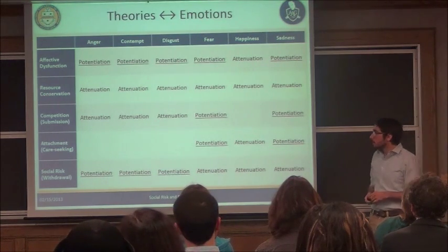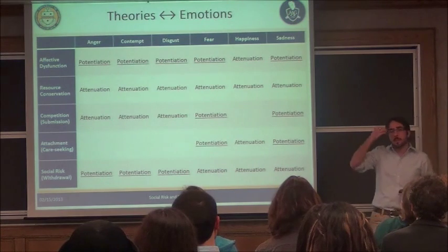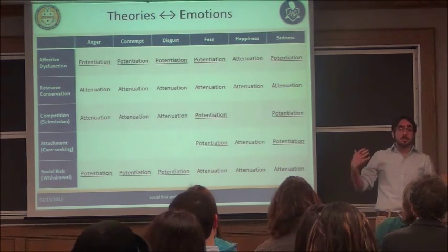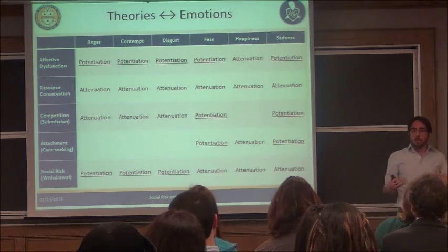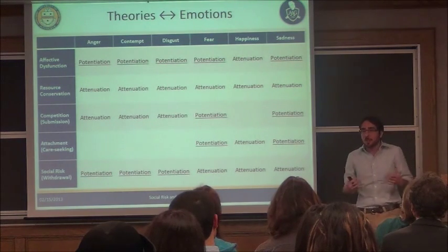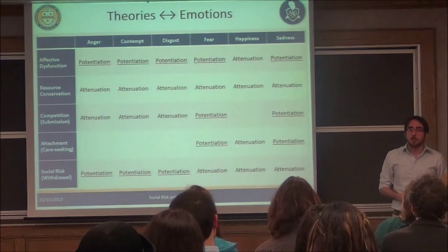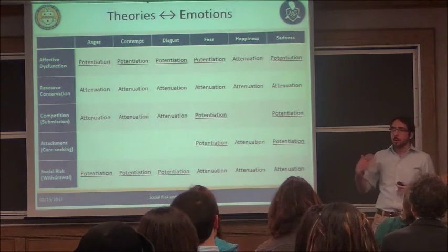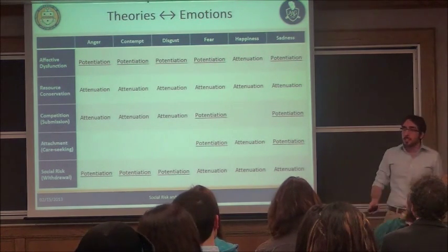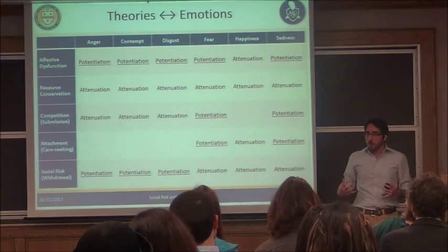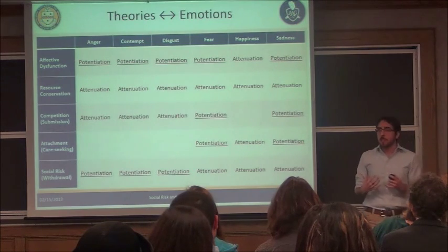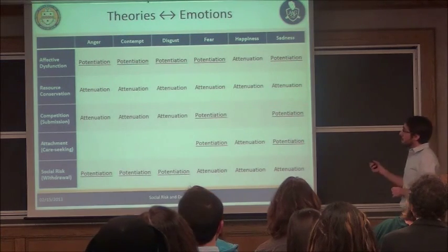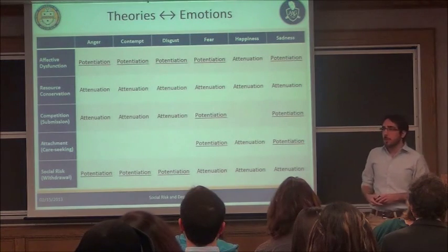The resource conservation theory views the depressed state as an adaptive response to a low-reward environment. If you imagine a drought or famine, going out and exploring or fighting would be wasteful because you couldn't replenish your resources. It would be adaptive to stay home and not really react to anything until conditions improve. So we should see an attenuation of pretty much everything.